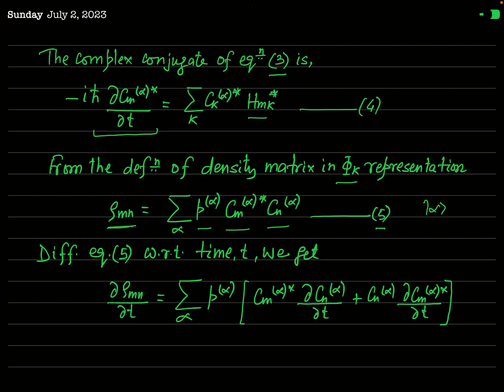Differentiating ρ_mn partially with respect to t, and noting that p_α is time-independent while c_m^α* and c_n^α are both time-dependent, we apply the product rule of differentiation. The result is: ∂ρ_mn/∂t = Σ_α p_α [c_m^α* (∂c_n^α/∂t) + c_n^α (∂c_m^α*/∂t)].